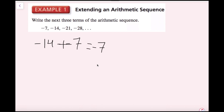So my common difference is negative 7. Now I just have to find the next three terms. The first term is negative 7, then negative 14, then negative 21, then negative 28. If you just keep subtracting 7 from the previous term, we're going to get negative 35, then the next term would be negative 42, and the next term would be negative 49.